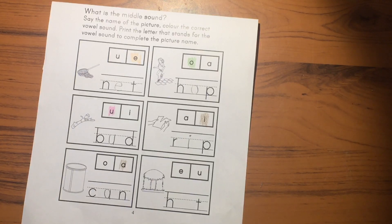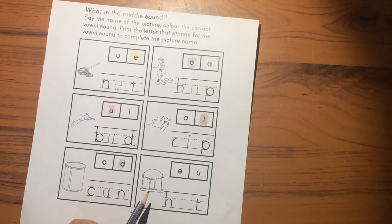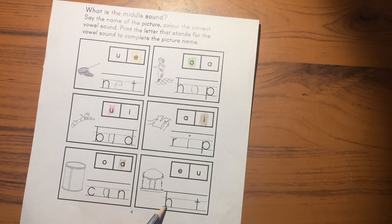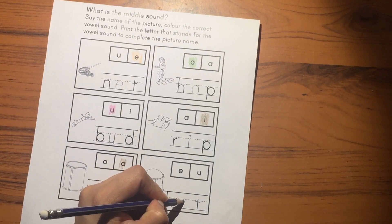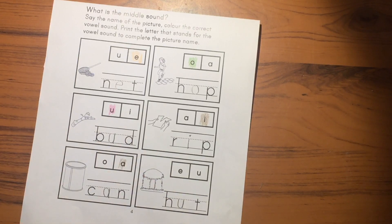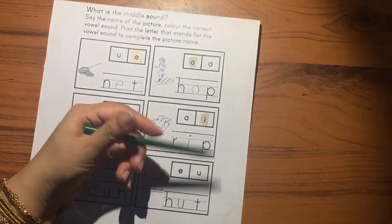The next picture is hut. Hut, H-U-T. So you will write the U vowel here. And then you will color U.